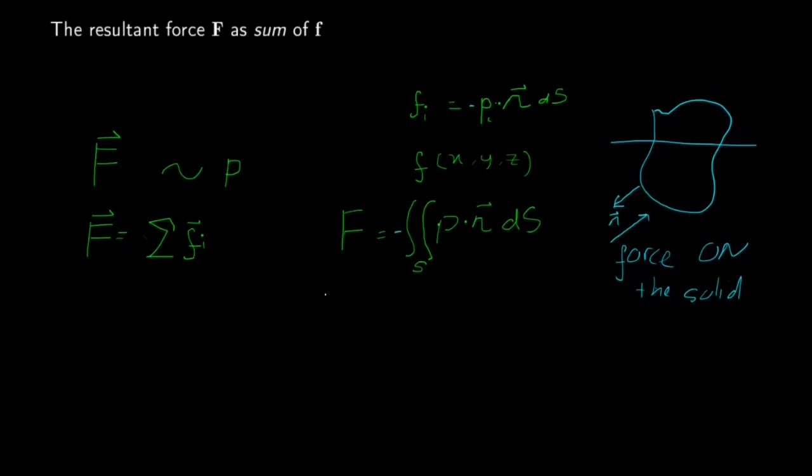Since p is negative rho gz, then we can express the resultant force this way. The negative signs are simply cancelled out.